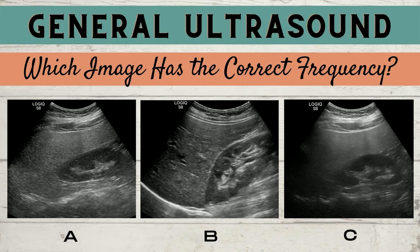So first, let's start with a little pre-quiz. Which image has the correct frequency — A, B, or C? And secondly, do you know the structures that are present in these images? Hint: there are three main structures we're going to look at.